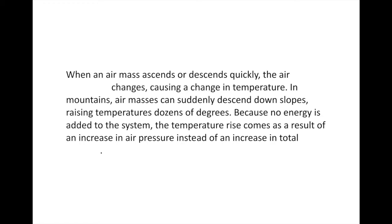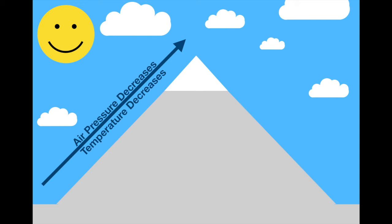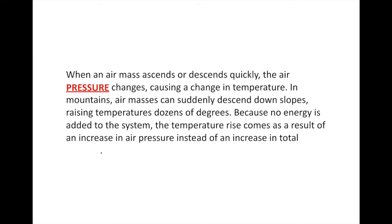We see adiabatic processes in nature when air mass parcels ascend or descend quickly — the air pressure changes, causing a change in temperature. Looking at this image of a mountain range: as a parcel of air moves up, air pressure decreases and as a result the temperature decreases. When it rushes downward from the top of the mountain, the air pressure increases as it gets lower in the atmosphere, and the result of that increasing air pressure is the temperature increasing. Air masses descending down slopes can gain dozens of degrees through this adiabatic process because no energy is added — the temperature rise results from increased air pressure, not increased total energy.